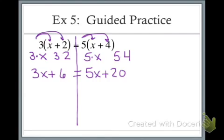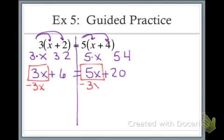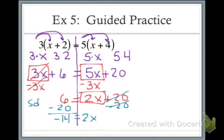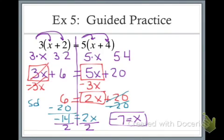Do I see any fractions? No. Can I combine similar terms? I can't combine an x with a constant term. So I box my variable terms. 3 is smaller than 5, so I take the opposite and add 3x to both sides. The 3x's cancel on the left, leaving positive 6. 5x minus 3x leaves me with 2x. I re-box the variable term. The constant term positive 20 crosses as a negative to both sides. Positive 6 minus 20 — signs are different — I subtract and get negative 14. Last step: pull the coefficient away from x, so negative 14 divided by 2 gives me negative 7 equals x.